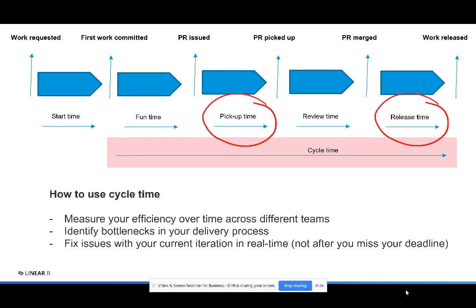You can actually look at cycle time in real time to fix issues in real time inside of your iteration versus after. For example, if your review time is a lot higher in your current iteration than normal, that may be a signal that your team needs more information from product management, and you can dig in and fix that to ensure that you hit your date.